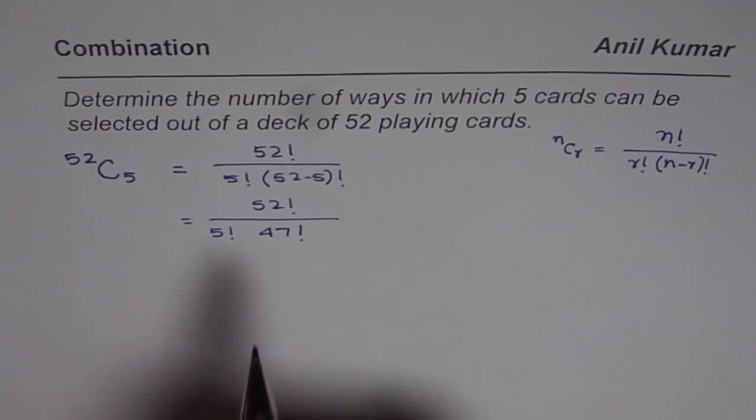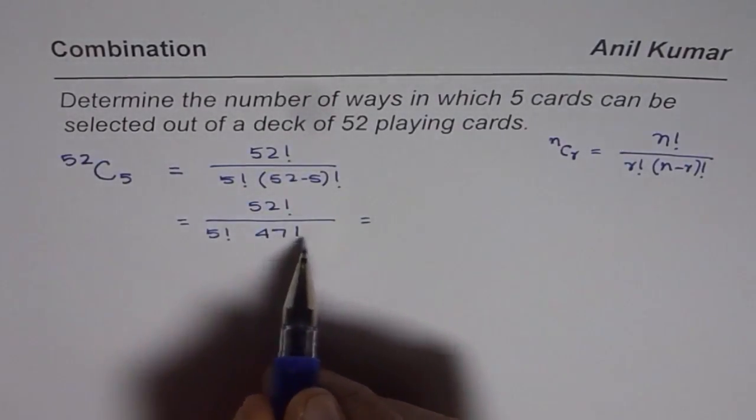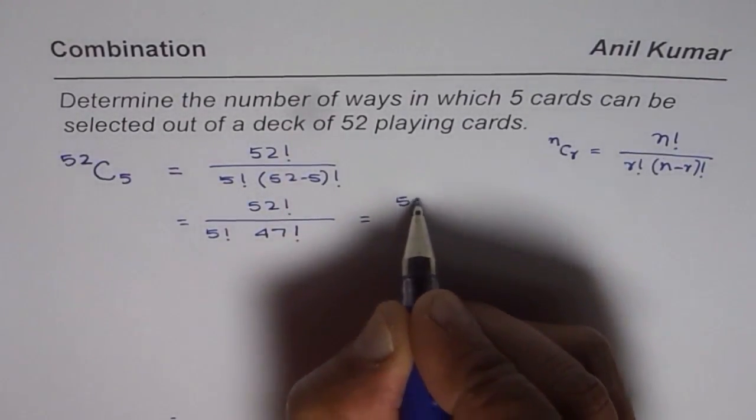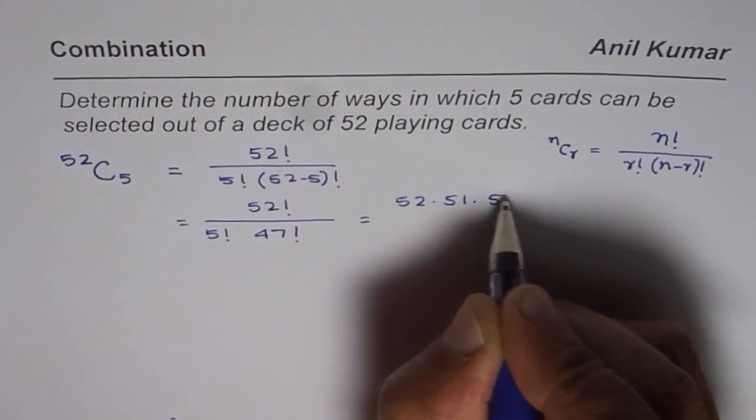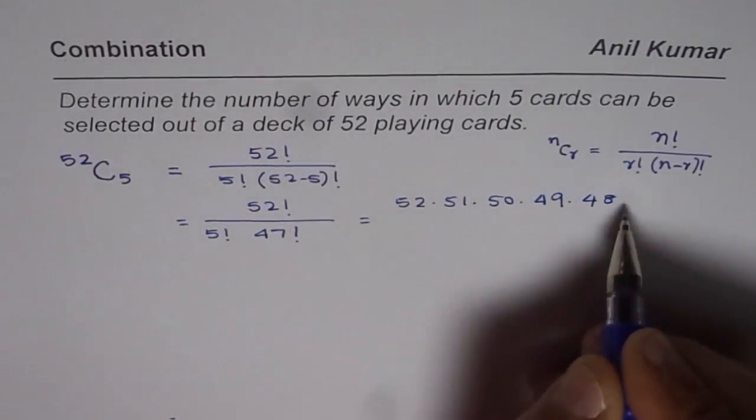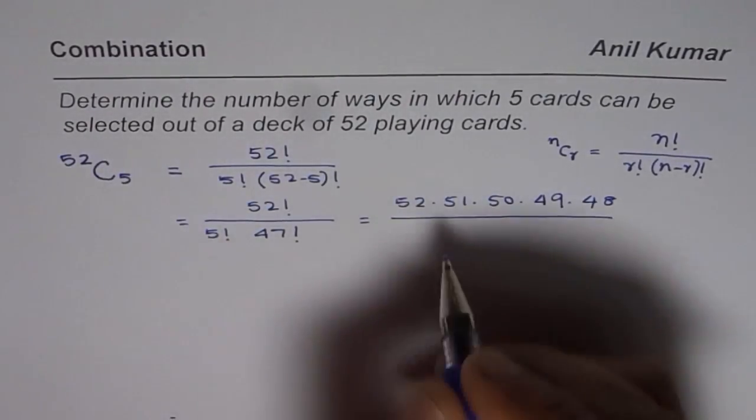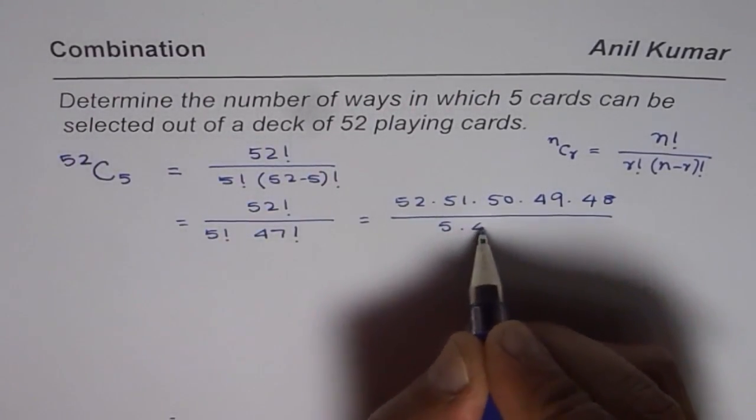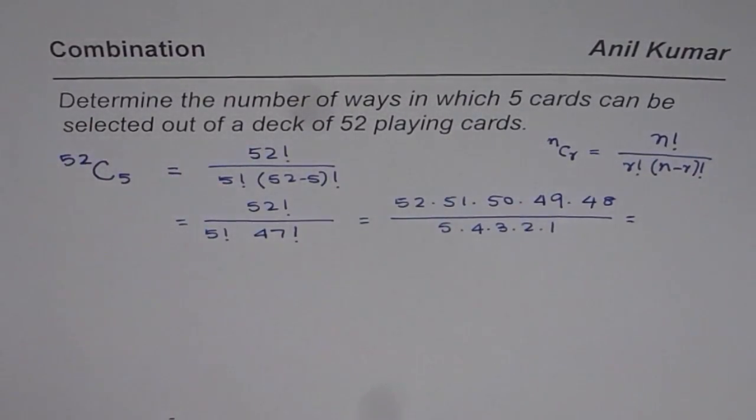You can also write this term as 52 factorial divided by 47 factorial, which could be written as 52 times 51 times 50 times 49 times 48 and then 47 factorial cancels, all divided by 5 factorial which is 5 times 4 times 3 times 2 times 1. Use calculator to calculate this answer. So these are the ways in which you could calculate.